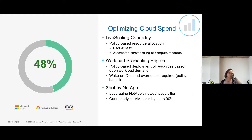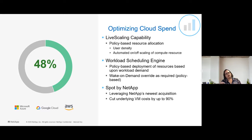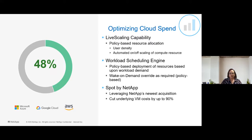With those two features you can save up to 48% of your overall cloud spend very quickly and easily. We also have Spotlight NetApp, which works with the compute layer to allow you to cut those underlying compute costs by upwards of 90%. So now you've got no excessive virtual machines that are not being used, you've got your resources when you need them, wake-on-demand resources when you need those, as well as lower compute costs overall.